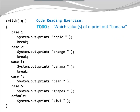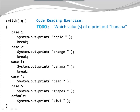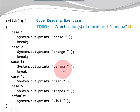Look at this switch statement — it is slightly different than the one before. We're using an integer variable q but with different print statements. Which values of q will print out banana? Pause the video, and when you're ready press continue. So number 3 — if q was 1, I would print apple and be done. If it was 2, I would print orange and be done. Now if my q is 3, I actually print banana and hit the break statement.